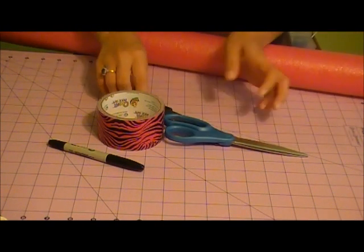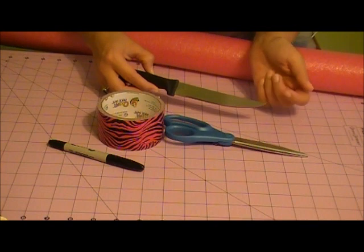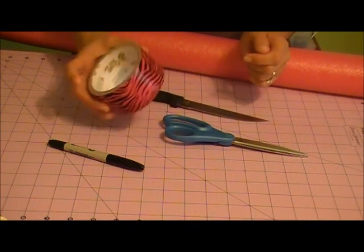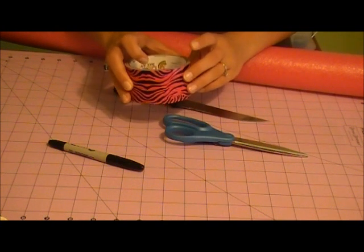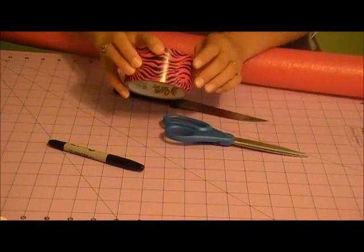What you're also going to need is a knife to cut your pool noodle. You're going to need some duct tape. I only happen to have this zebra duct tape but that should work okay.